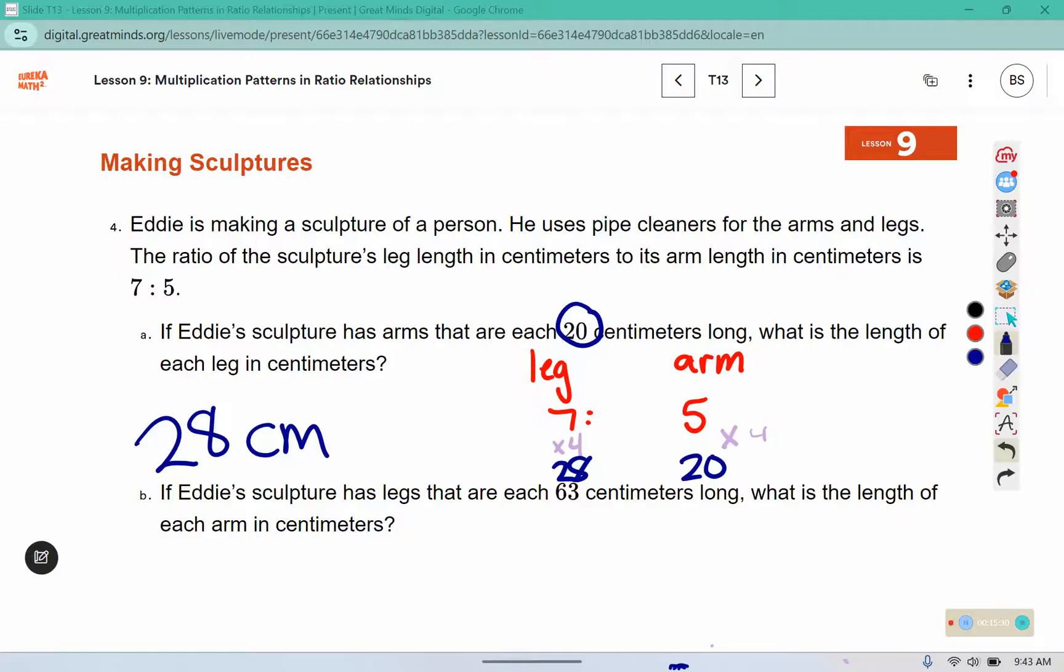Part B. If Eddie's sculpture has legs that are 63 centimeters long, what is the length of each arm in centimeters? So again, we'll start with that original ratio. This time it says the legs are 63.